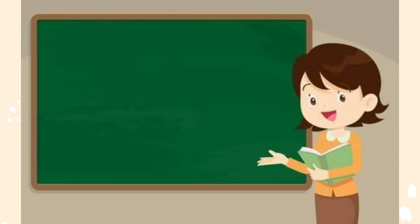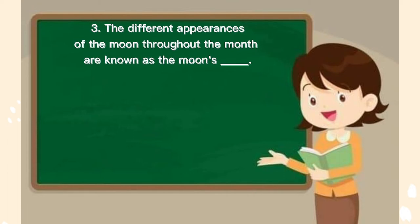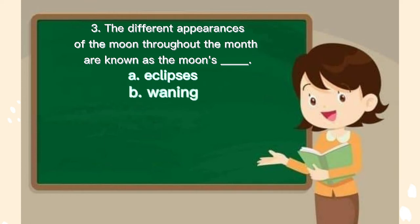Number 3. The different appearances of the moon throughout the month are known as the moon's blank. A. Eclipses, B. Waning, C. Waxing, D. Faces.